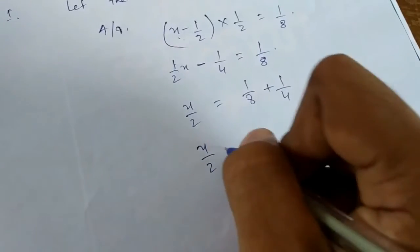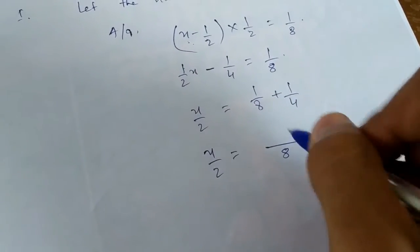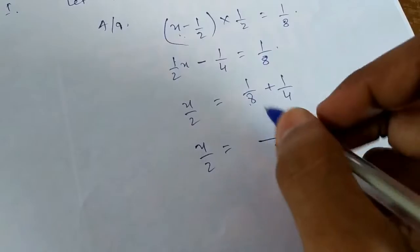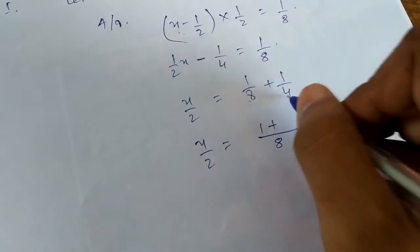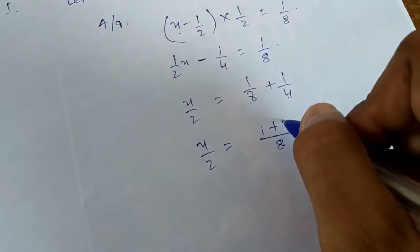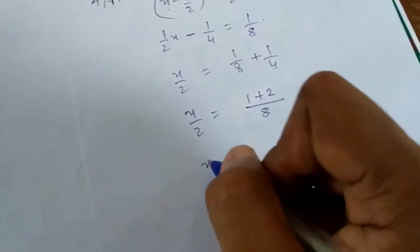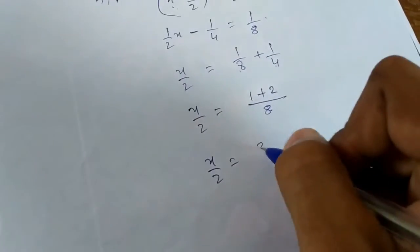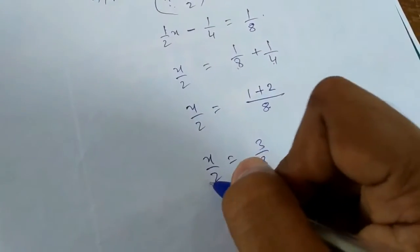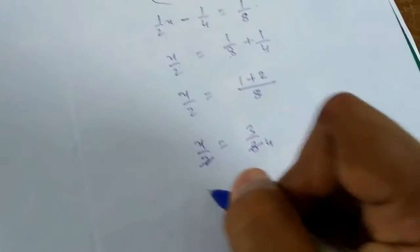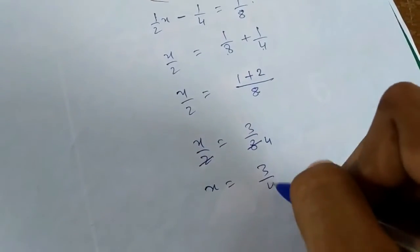x by 2 is equal to 1 by 8 plus 1 by 4. Taking LCM of 8 and 4, we get 8. So 1 by 1 plus 2 by 2, x by 2 is equal to 3 by 8.